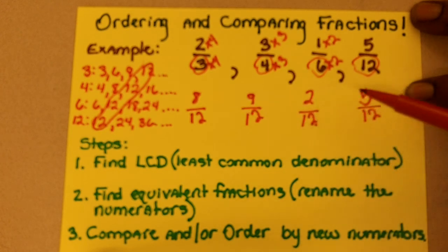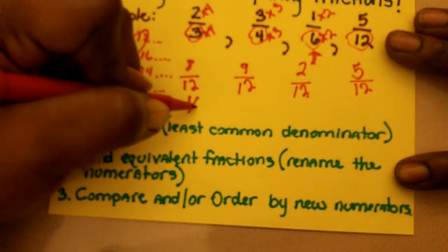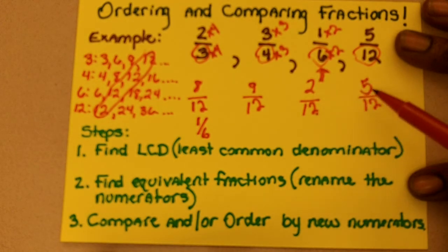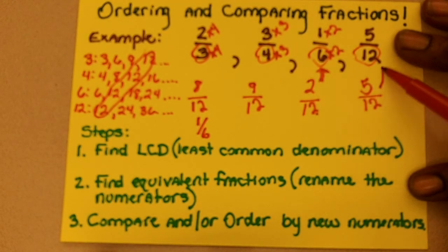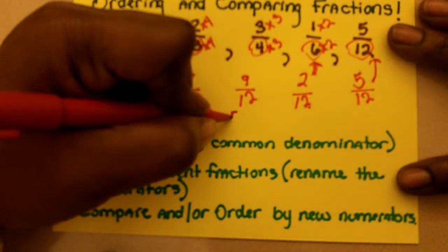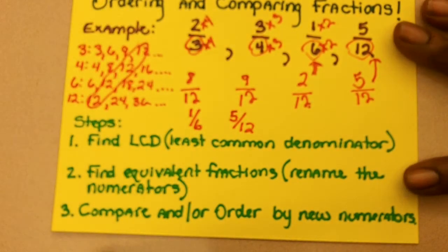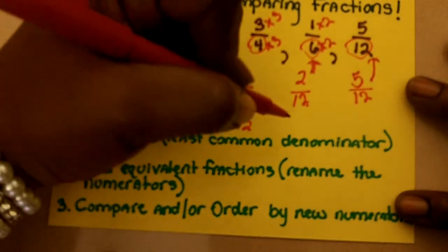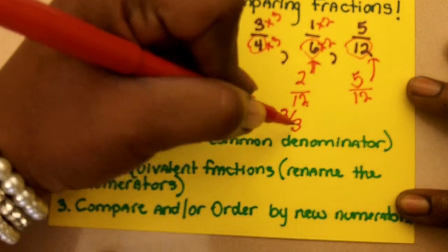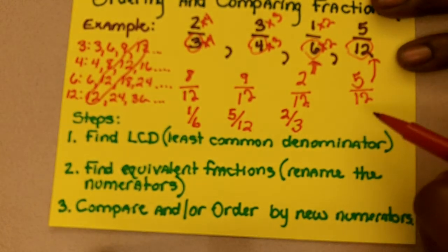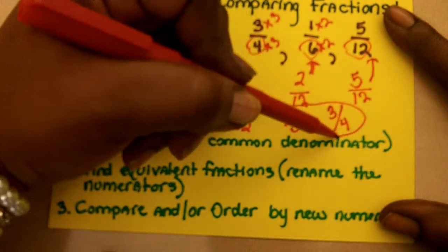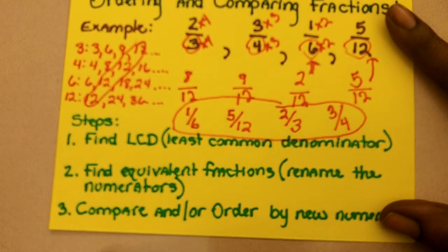Step three: compare or order the new numerators. Since the denominators are all the same, we just focus on the numerators to put them in order from least to greatest. We have eight, nine, two, and five. Clearly two is the smallest, so one-sixth is the smallest fraction. After that we have five, which came from five-twelfths. Next is eight, which came from two-thirds. And the last numerator, nine, came from three-fourths. Therefore, from least to greatest, the order is: one-sixth, five-twelfths, two-thirds, three-fourths.